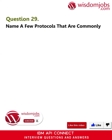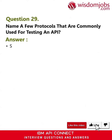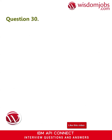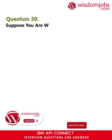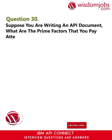Question 29: Name a few protocols that are commonly used for testing an API. Answer: The commonly used protocols are SOAP, HTTPS, UDDI, and JMS.